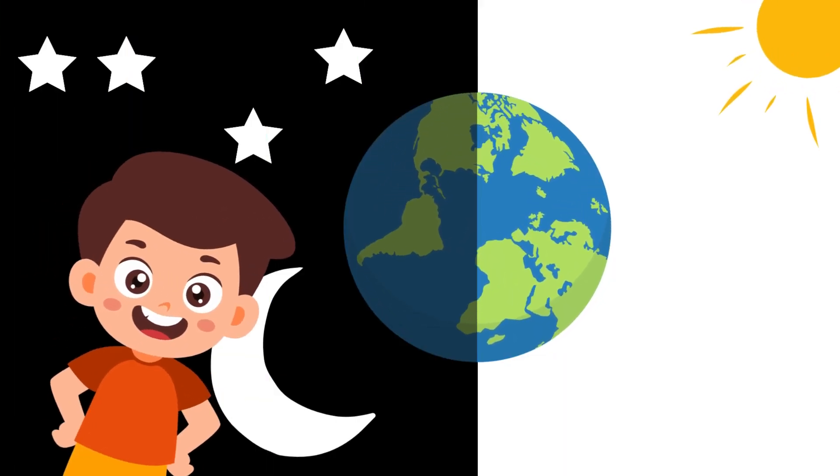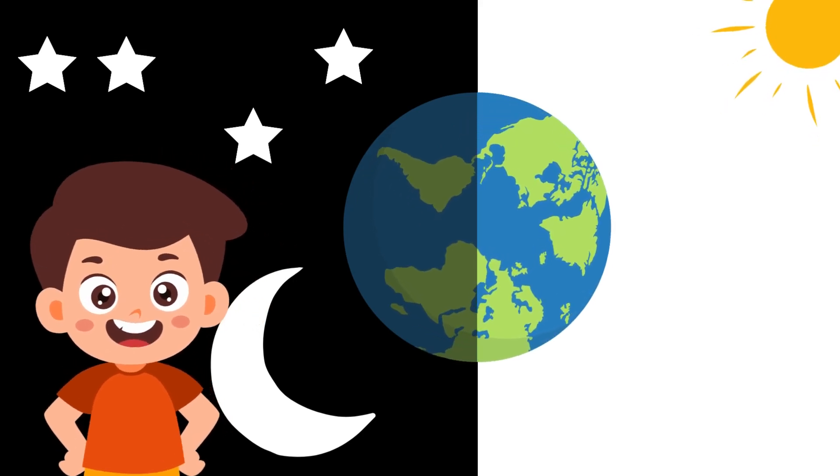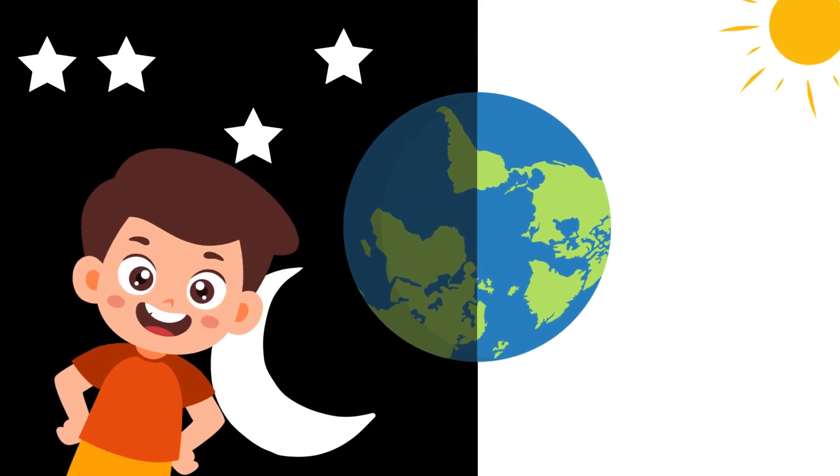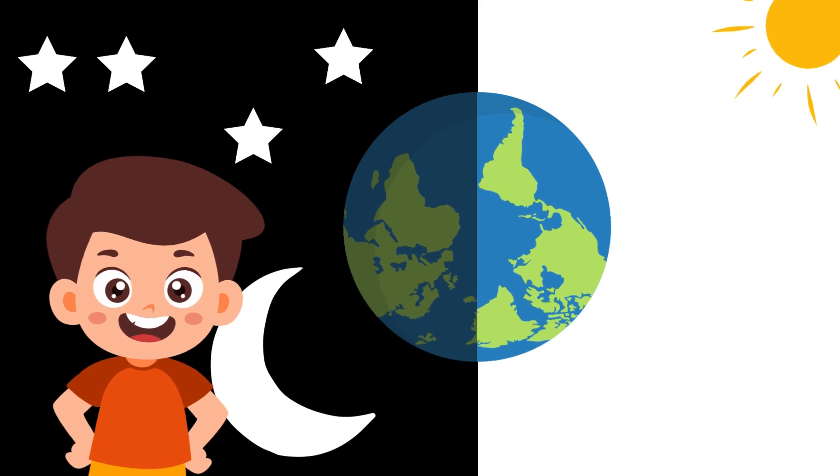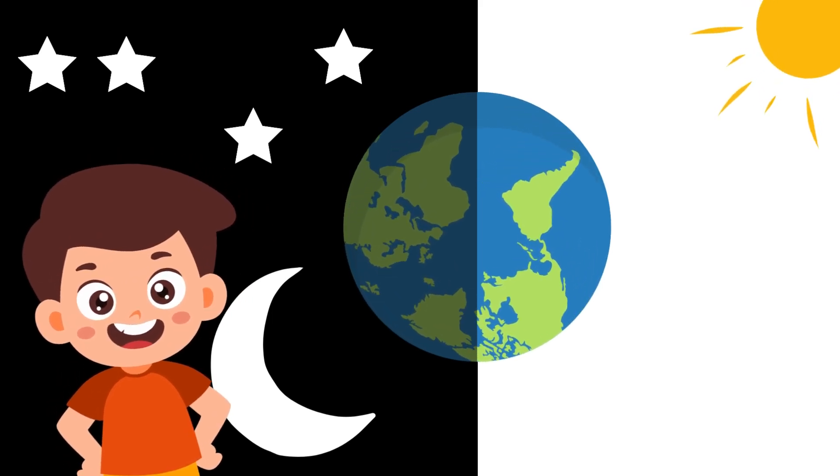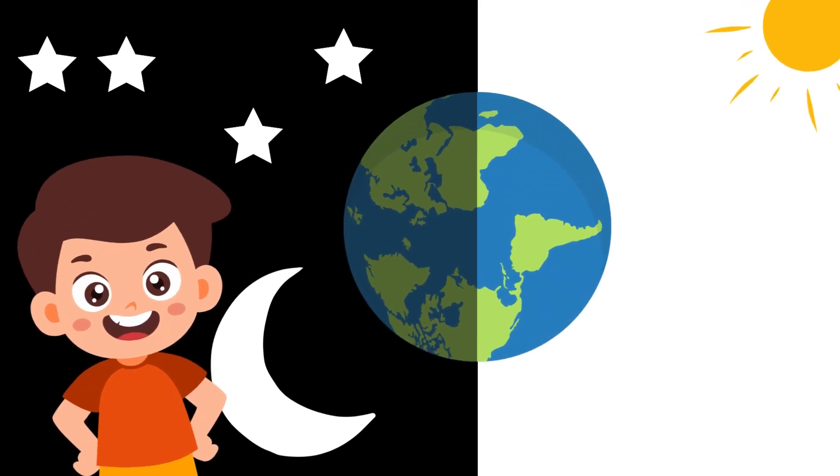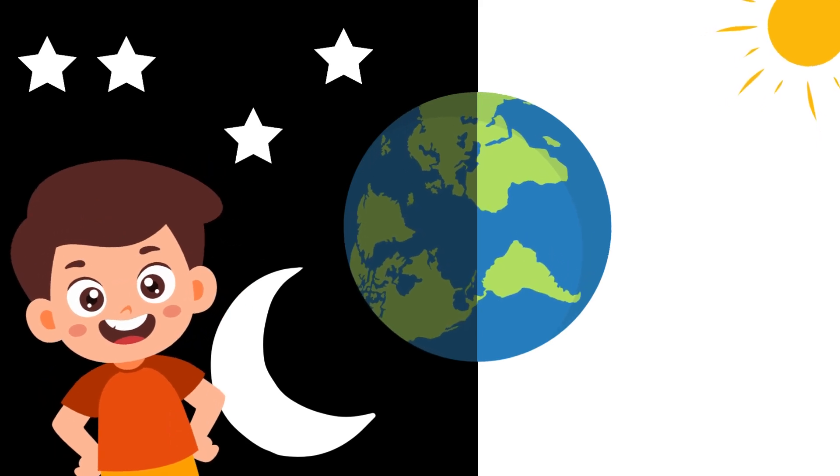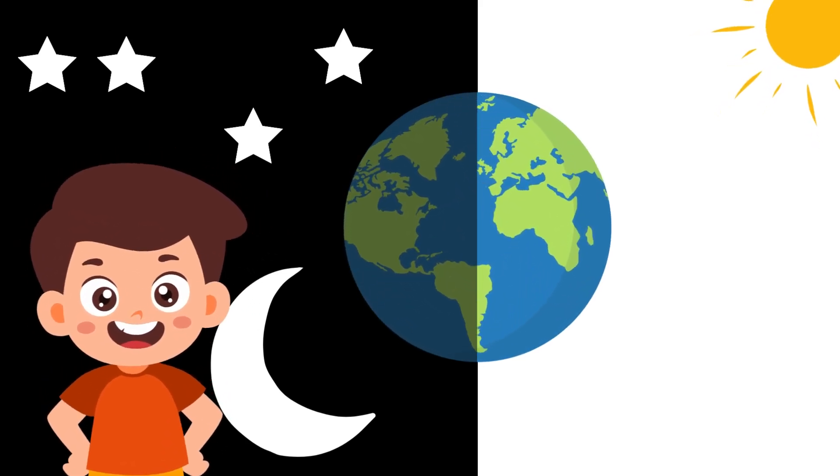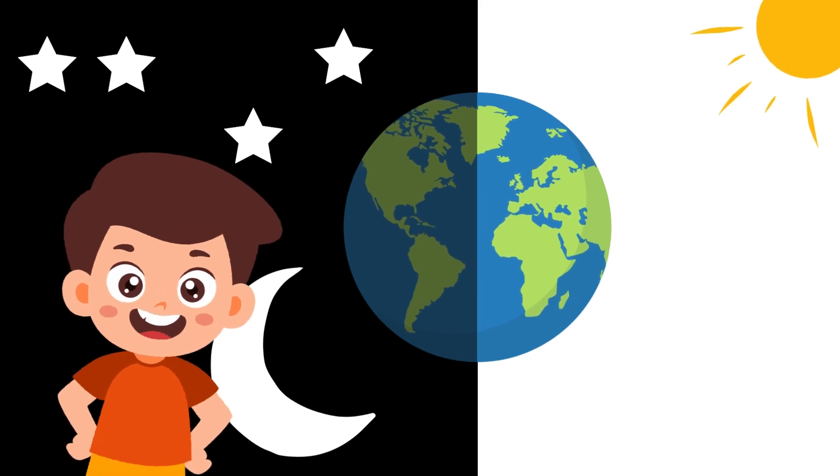As Earth continues its spin, the cycle repeats. Every part of the planet gets its fair share of sunny days and peaceful nights, creating a rhythm that we call the day-night cycle. So, day and night are like Earth's way of putting on a spectacular show, taking turns sharing the warmth and light of the Sun with everyone and creating a perfect balance of adventure and rest.